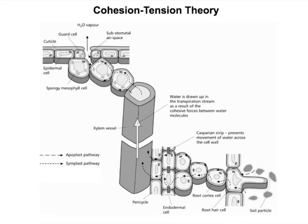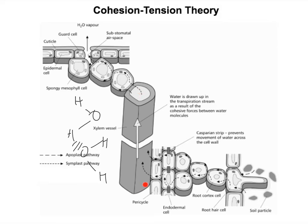In this diagram, the leaf is at the top and the roots are at the bottom, showing that the xylem joins the roots to the leaves. Within the xylem, we have a continuous column of water. Each water molecule is joined by hydrogen bonds, so the water molecule at the top of the xylem is connected to the water molecule at the bottom, each one held together by hydrogen bonds.